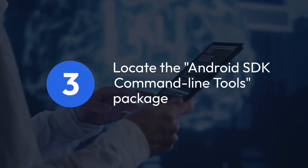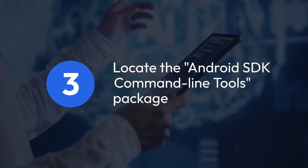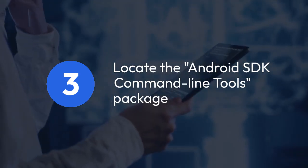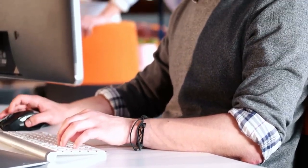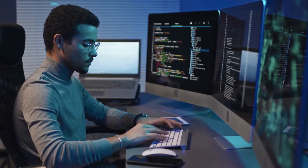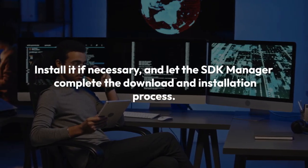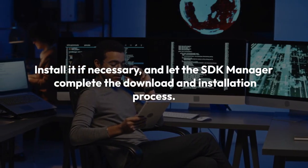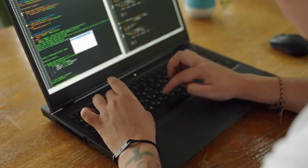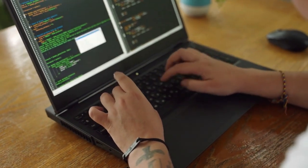In the SDK manager, locate the Android SDK command line tools package, or a similar package depending on the Android Studio version. Make sure that it's checked for installation — it might be installed already, in which case it's okay to leave it as is. Install it if necessary, and let the SDK manager complete the download and installation process. Once finished, restart your IDE or your computer to ensure changes take effect.